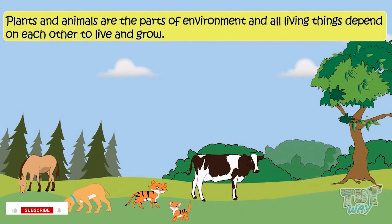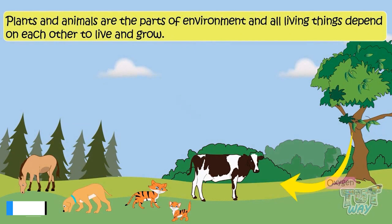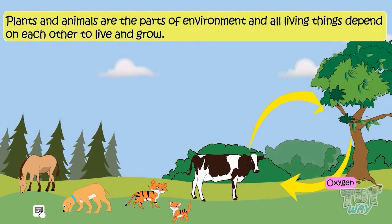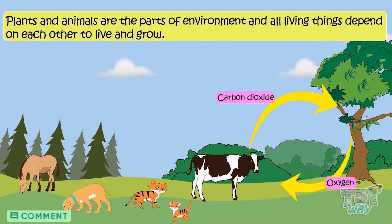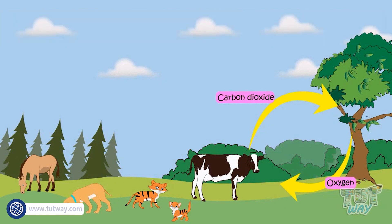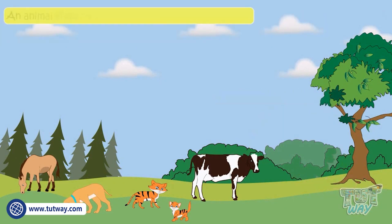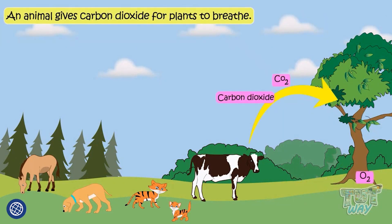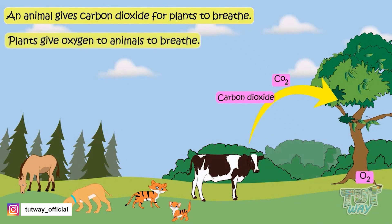For example, plants give animals oxygen to breathe, as plants take in carbon dioxide and give out oxygen in the atmosphere. And animals give carbon dioxide for plants to breathe, as they take in oxygen and give out carbon dioxide in the atmosphere.